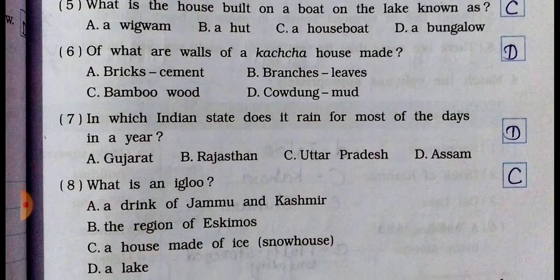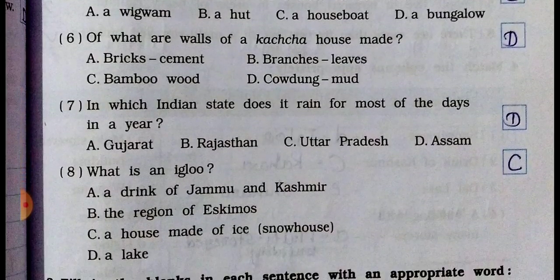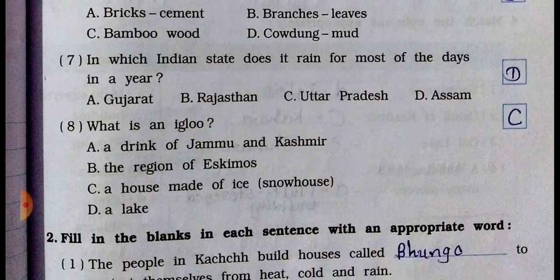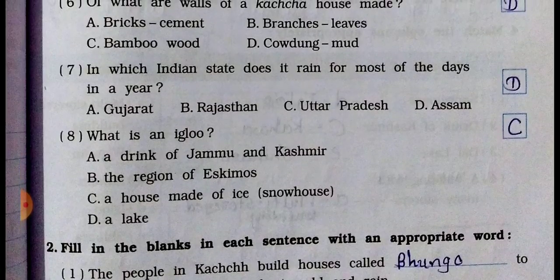Question number seven: in which Indian state does it rain for most of the days in a year? Option A: Gujarat. Option B: Rajasthan. Option C: Uttar Pradesh. Option D: Assam. In Assam it rains most of the days in a year, so D is the right answer. Write D in the box.